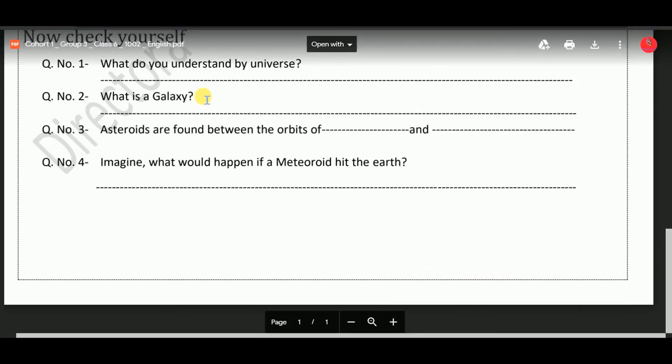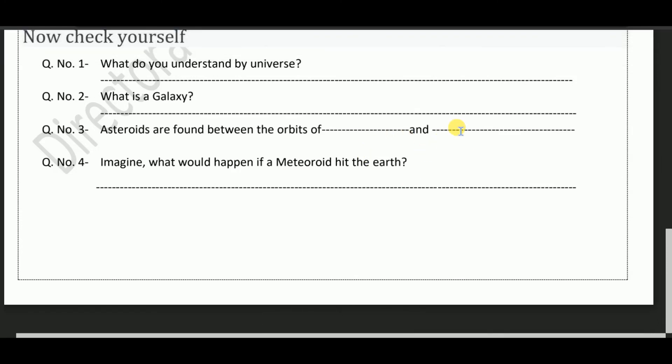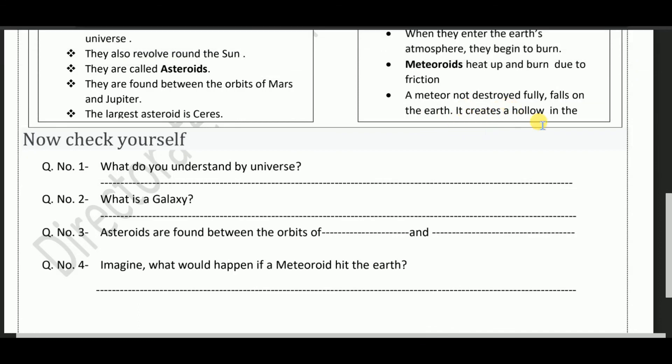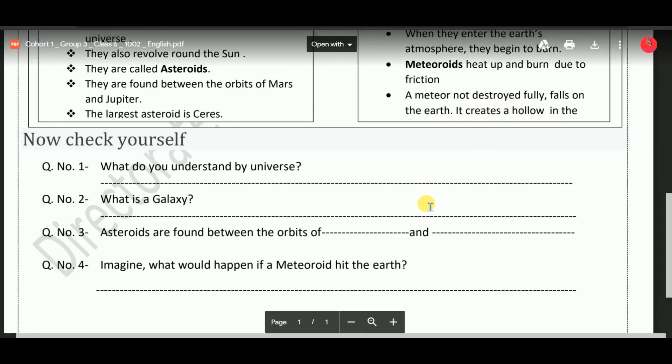Let's move forward. Question number three: Asteroids are found between the orbits of dash and dash. The asteroids are found on the orbits of Mars and Jupiter. You can see the spelling also. Imagine what would happen if a meteoroid hit the Earth. If a meteoroid hit the Earth it will create a hole in the Earth's surface. Okay, bye bye guys.